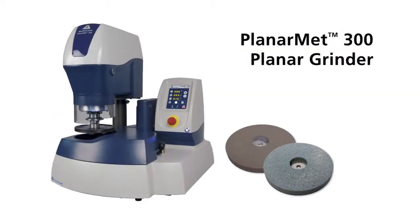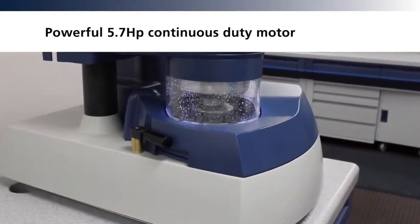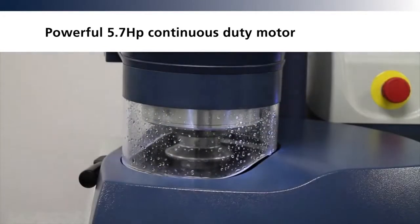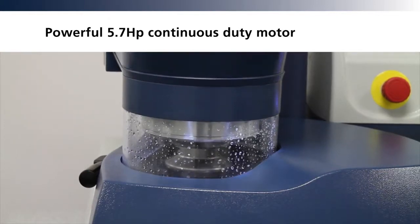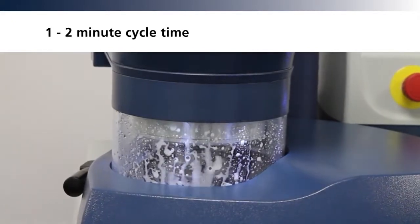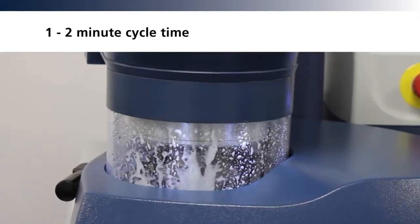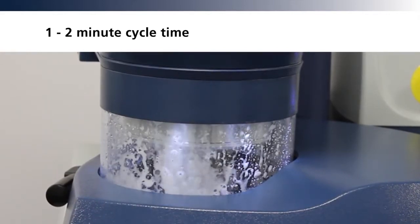The Planermet 300 Planar Grinder. Efficient, accurate, and fast. This powerful benchtop planar grinding machine utilizes a fixed abrasive stone for rapid specimen grinding. Quick cycle times of one to two minutes provide flat plane specimens, replacing all other abrasive grinding steps.